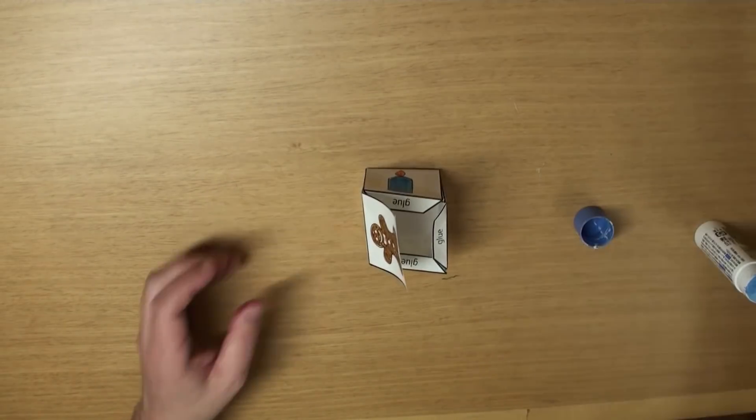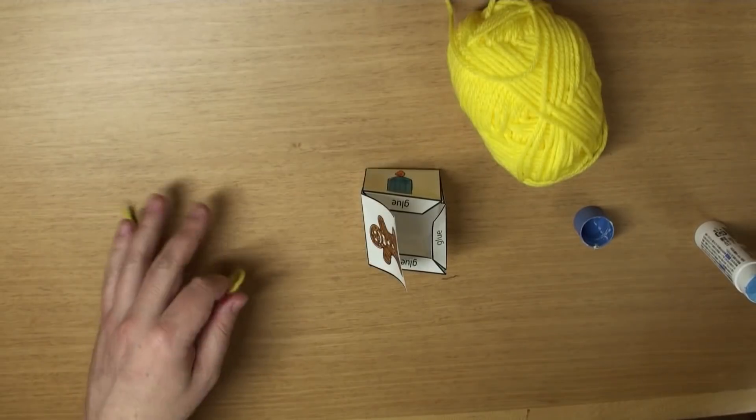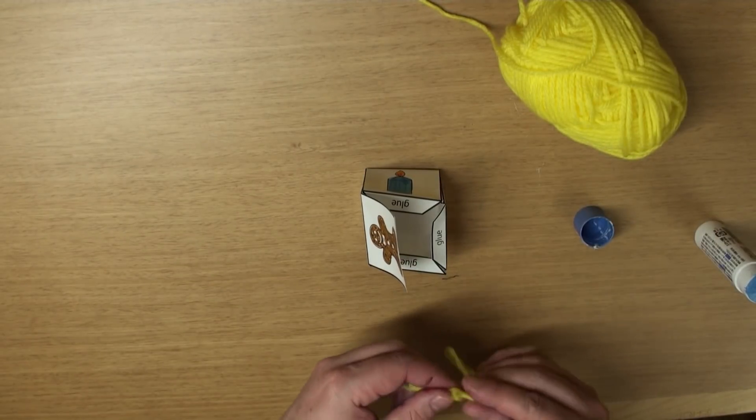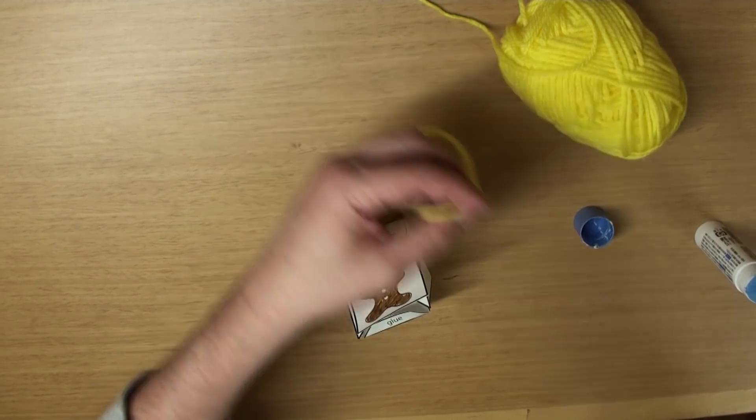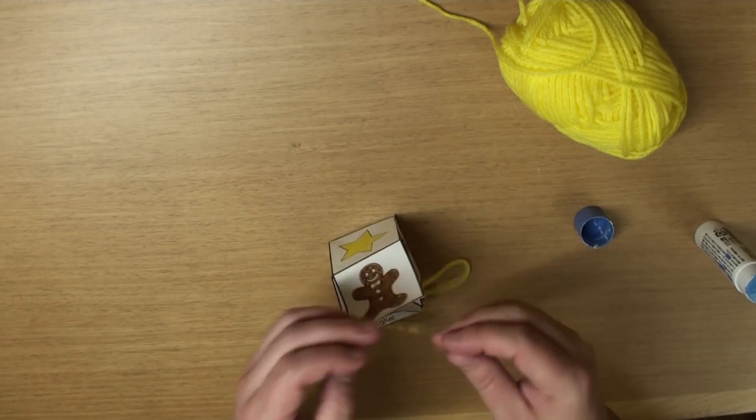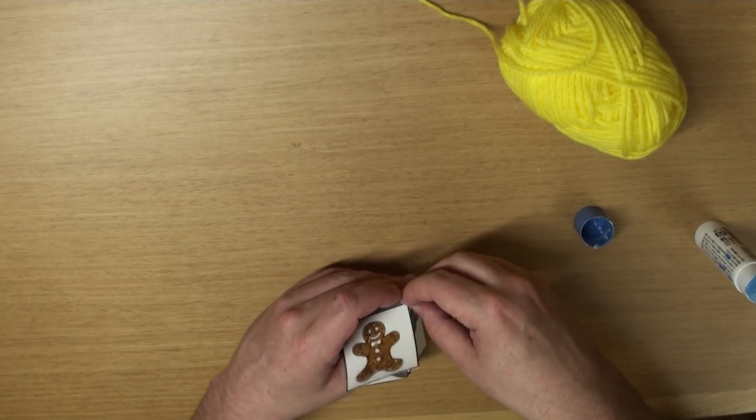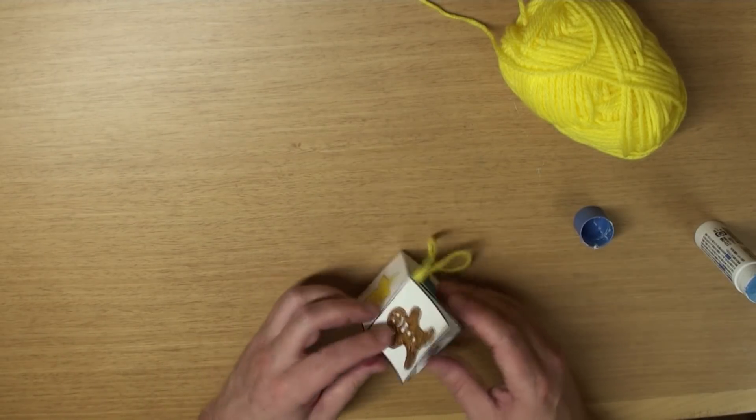Great! Now grab some string, okay? Yeah! I'm going to cut off a piece of string like this. Get some tape. Make a loop. And we're going to put some tape and tape it inside, okay? This is kind of sticky. Yeah! Like that.